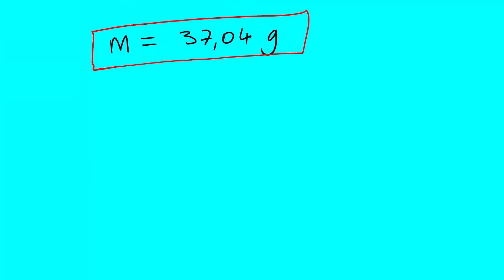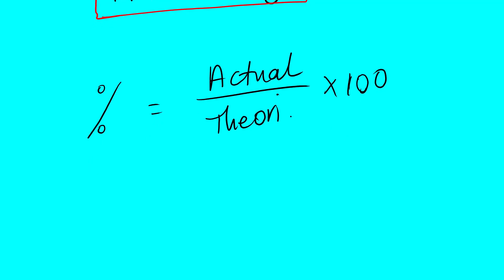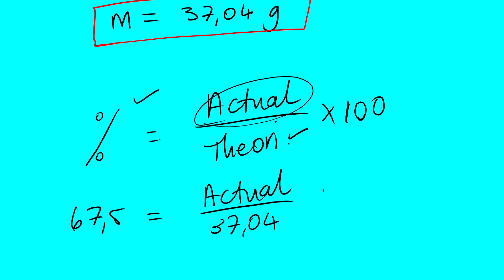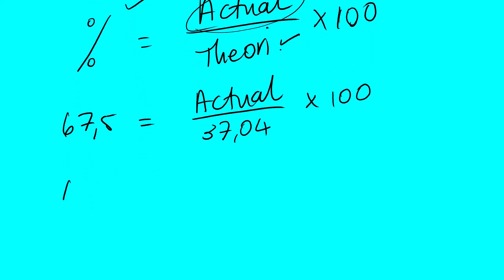So from here we can go ahead and use our equation. It's the actual over theoretical, multiply by 100. So we are given this, we just calculated this, we are looking for this now. So we have 100, we have 100 equal divided by 37.04.